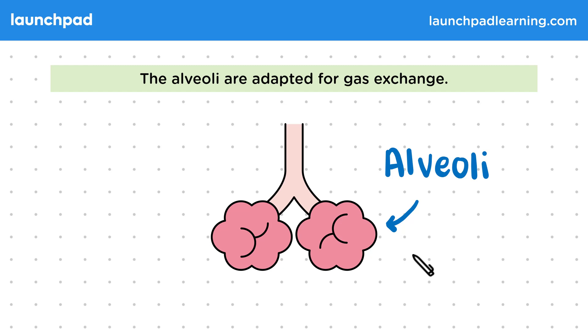The anatomy of the lungs is covered in more detail elsewhere in the course, but it's useful to use the alveoli as an example of how surfaces and organ systems are specialised for exchanging materials.